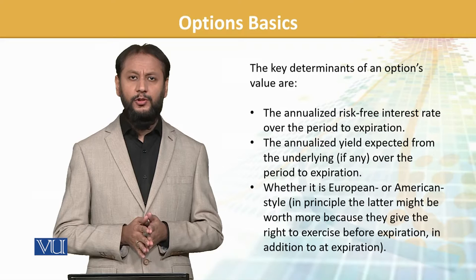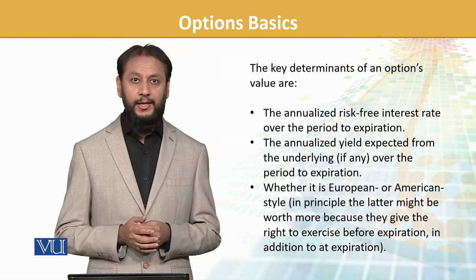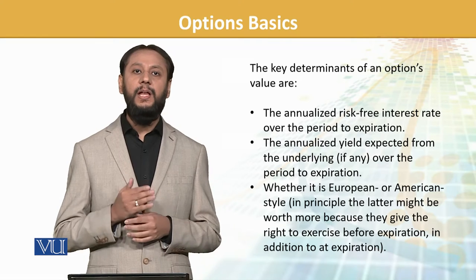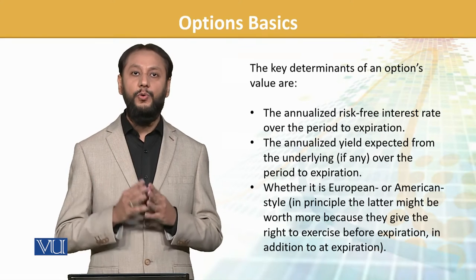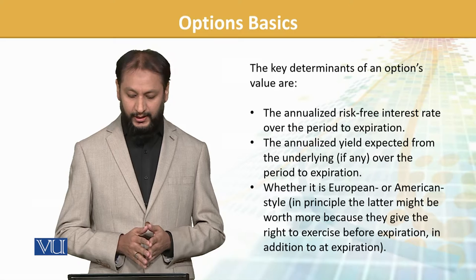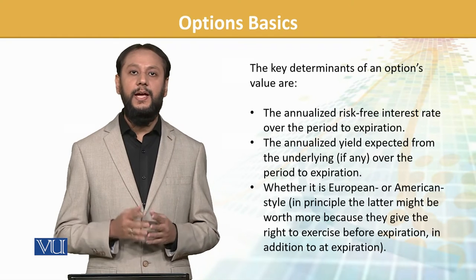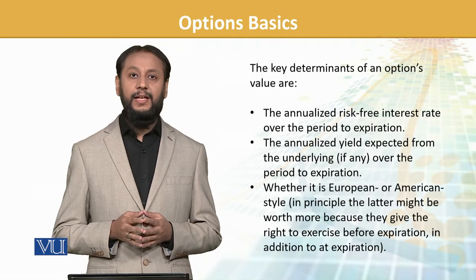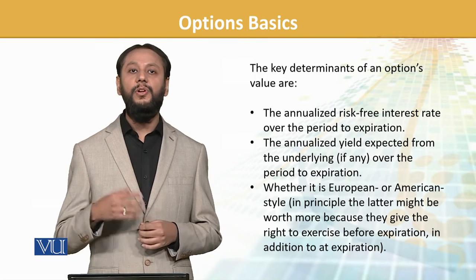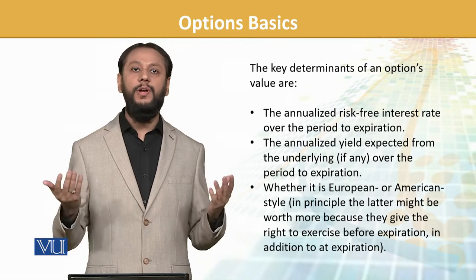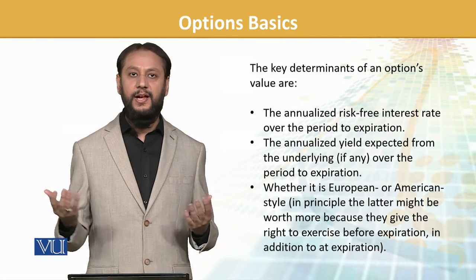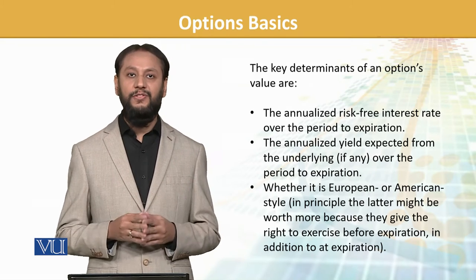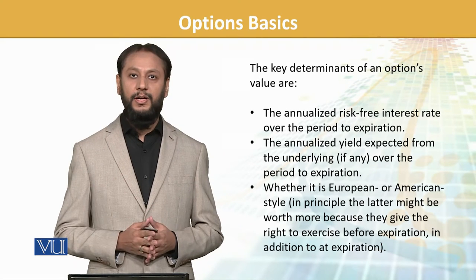Do you remember the difference between the two? These are not country names — they are the names of option types. In principle, European options can only be exercised at maturity: if it is a three-month option, it can be exercised after three months. Whereas American options can be exercised throughout the period, at any time. That is why American options normally have more worth because you have the choice to exercise at any point in time. All these factors together determine what the price and value of an option will be, and at what premium it will trade.